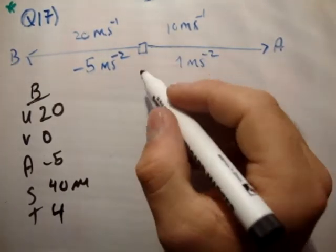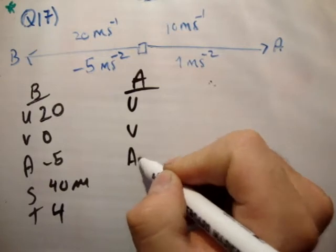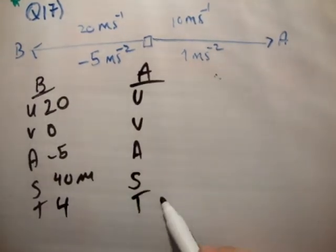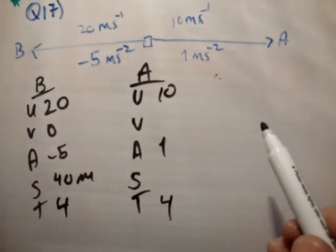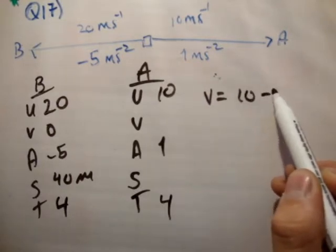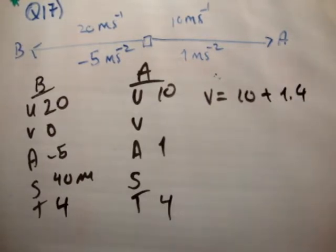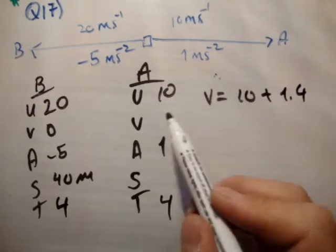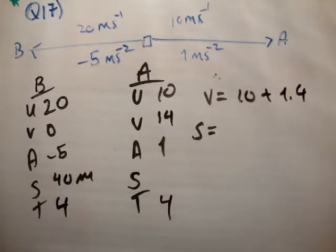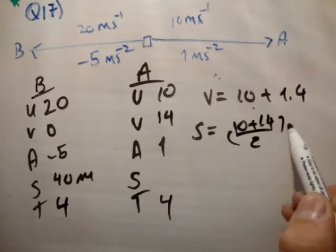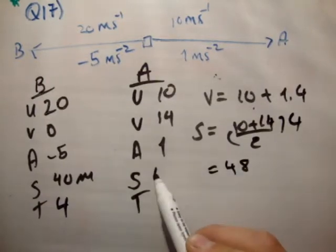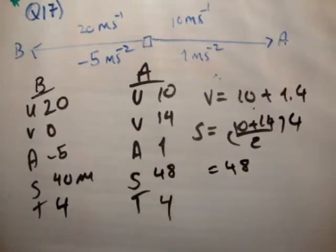Secondly, we'll go on car A. So, the time is 4 seconds. His initial speed is 10 meters per second and his acceleration is 1. So, V is equal to U plus AT is equal to 14. We'll say that's 1 times 4, which is 4. Add it to 10, that's 14. And S is equal to U plus V over 2 times T. 10 plus 14 over 2 times 4. So, that's 24 divided by 2 is equal to 12. 12 fourths is equal to 48.